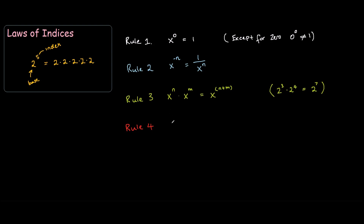Rule 4. So similar to multiplication: x to the n divided by x to the m is just x to the n minus m. So instead of adding them this time, you do subtraction. If we use the example 2 to the 3 divided by 2 to the 4, that would equal 2 to the negative 1. And remember, negative 1 from rule 2 is just the same thing as 1 half. So that would actually equal 1 half, and you can test that 2 to the power of 3 divided by 2 to the power of 4 is the same as one half as well.